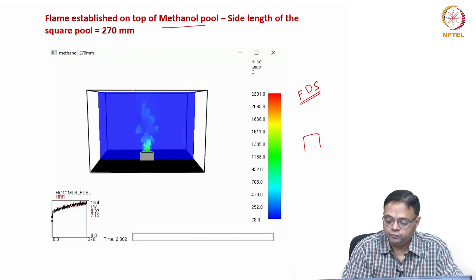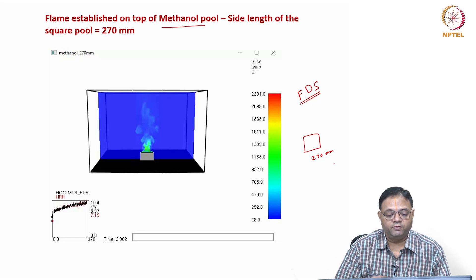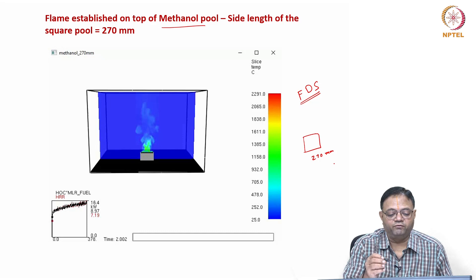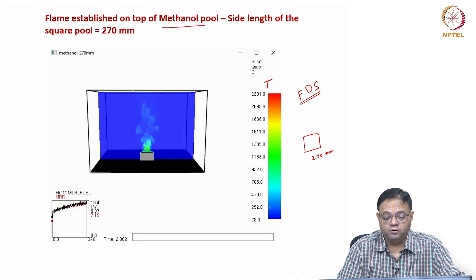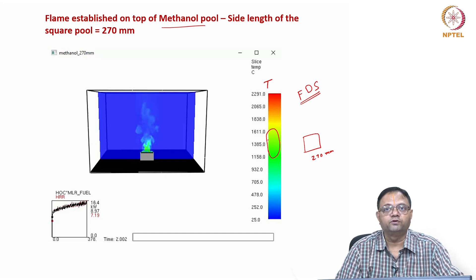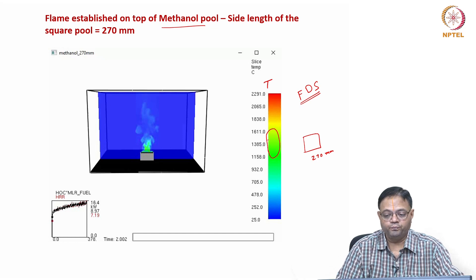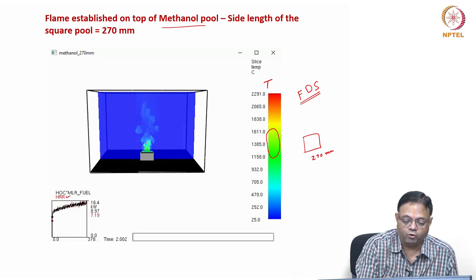The methanol pool has a square-shaped cross section of 270 mm side length. It is a turbulent flame basically, and this video shows the flame coming out and how the flame fluctuates. The temperature variation is shown by the color bar on the right-hand side. The green color indicates that the temperature is in the range of about 1400 to 1600 degrees centigrade.